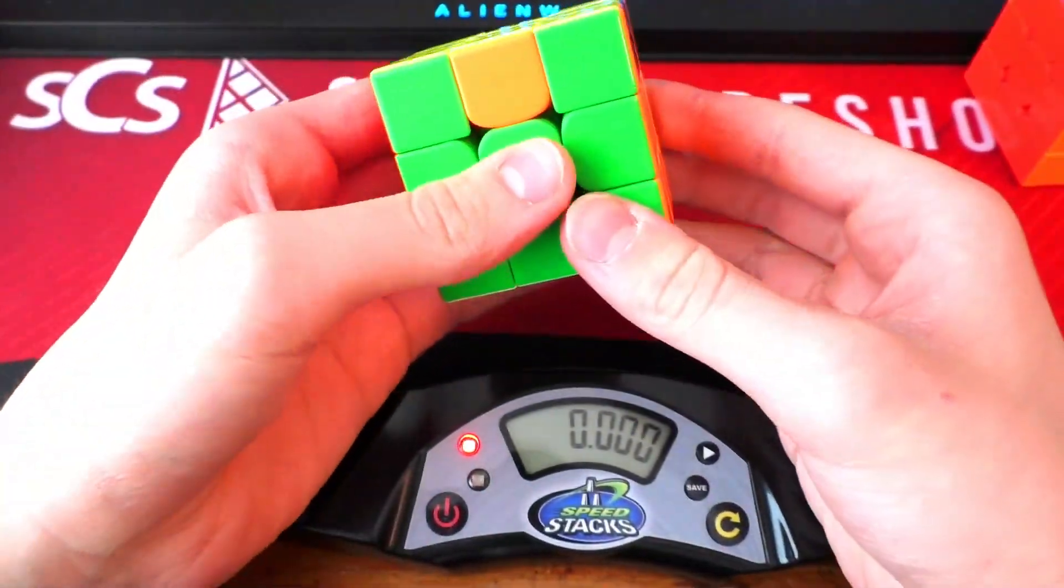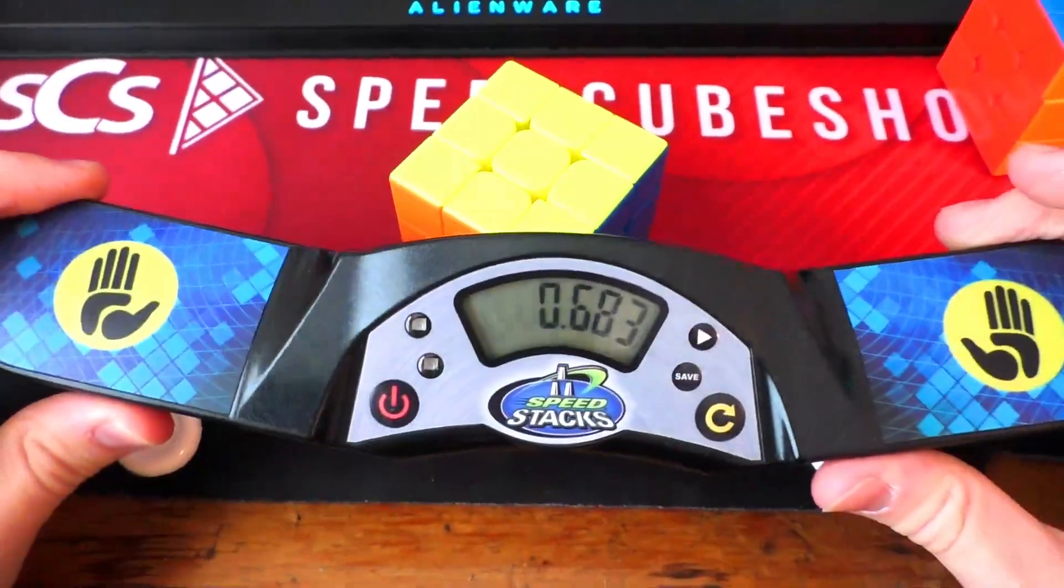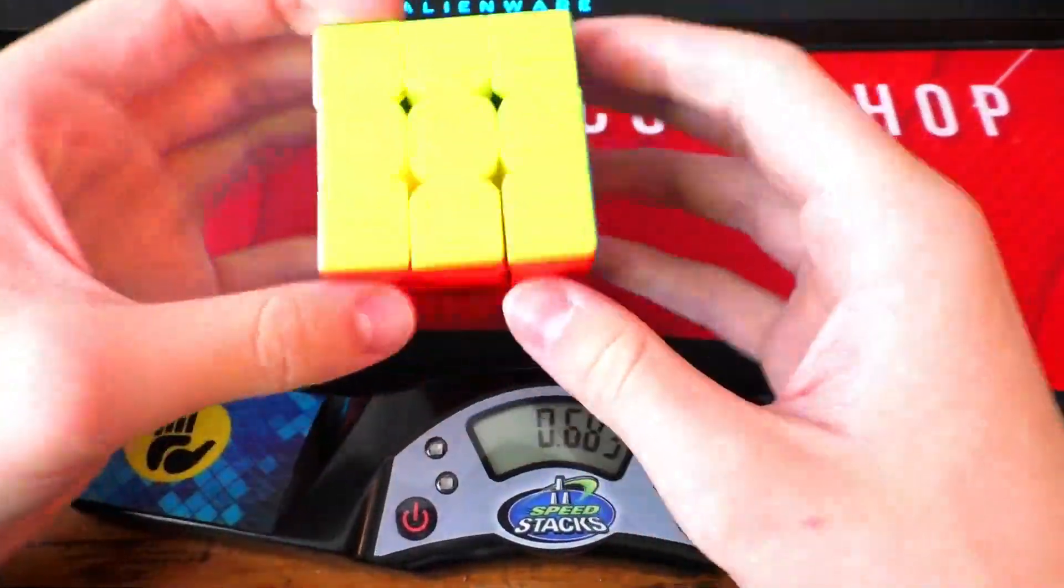Starting off with the R U S U perm, 0.683. Let's try it out in this cube.